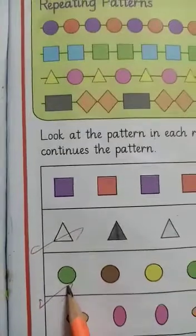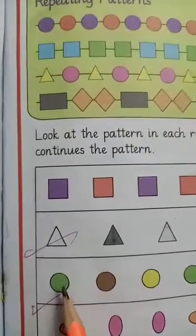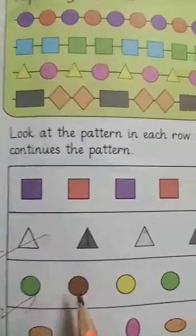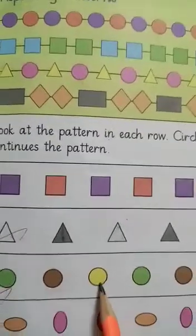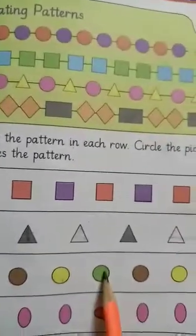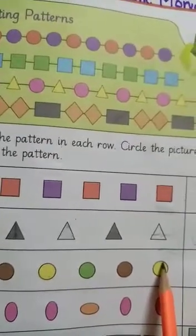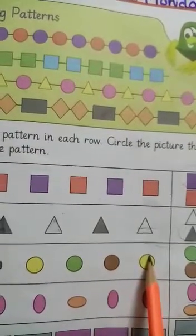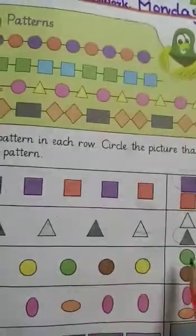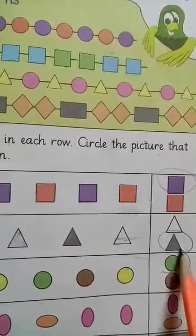Next row, green circle. Green, brown, yellow, green, brown, yellow, and our next shape, yes, green. Good, circle the green.